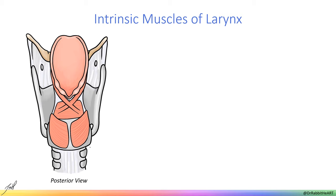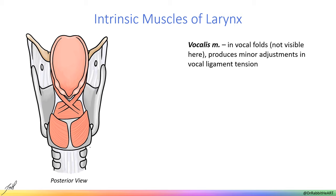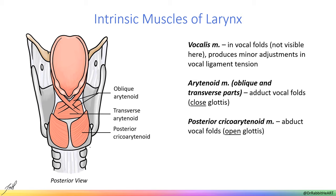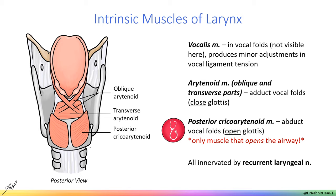The vocalis muscle lies within the vocal folds and functions to make small adjustments to vocal ligament tension — think about vibrato in a singer. The oblique and transverse arytenoid muscles work with the lateral cricoarytenoid muscle to close the glottis, while the posterior cricoarytenoid muscle functions to abduct the vocal folds, increasing the size of the glottis. All three of these muscles are innervated by the recurrent laryngeal nerve. Note that the posterior cricoarytenoid muscle is clinically relevant as the only muscle to open the airway, so damage to nerves affecting it may result in completely adducted vocal folds, which is a medical emergency.